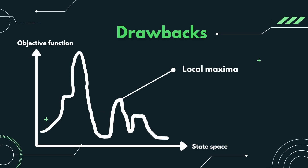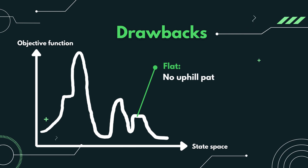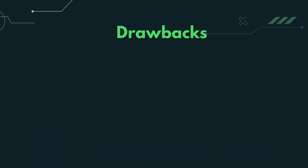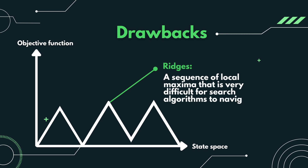There are a few drawbacks that we need to pay attention to in hill-climbing search. First is local maxima. Since it does not backtrack and only looks at its neighbours, it might not find the highest peak in the search space, but only the highest peak nearby. Second is plateau, a broad flat region that gives the search algorithm no direction. It can be a flat local maximum from which no uphill path exists, or a shoulder from which progress is possible. There are also ridges. The algorithm may terminate itself when it reaches a ridge, because the peak of the ridge is followed by downward movement rather than upward movement. This makes it very difficult for such algorithms to navigate.